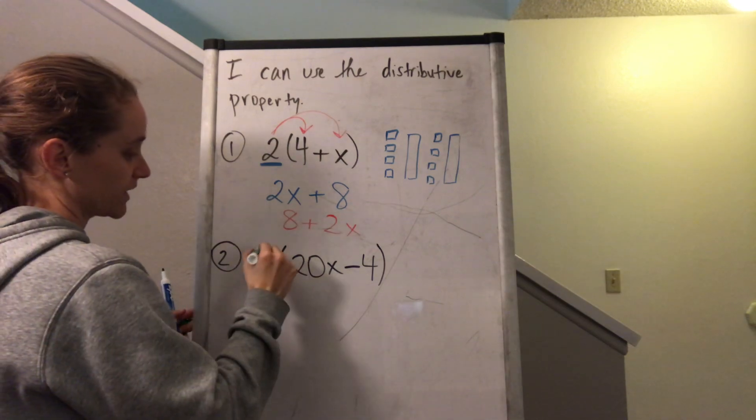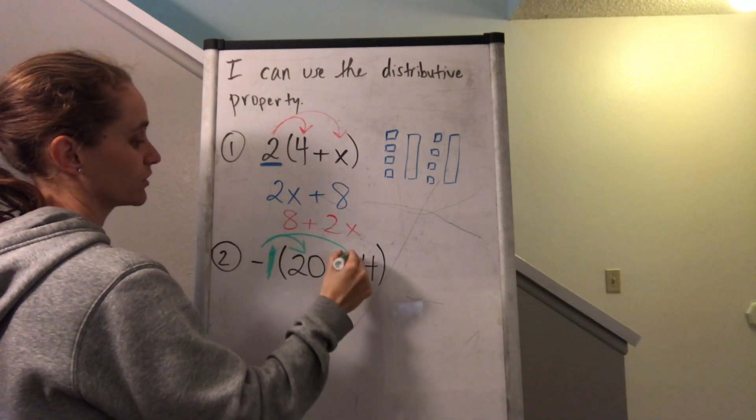So basically it's saying I do negative one times 20X, and then negative one times negative four.